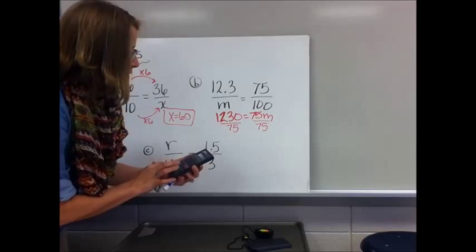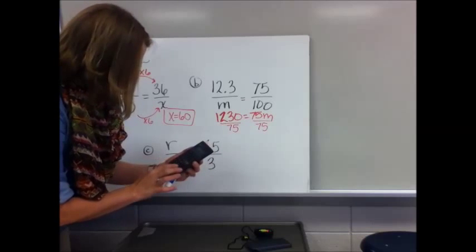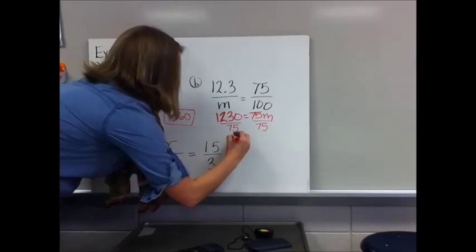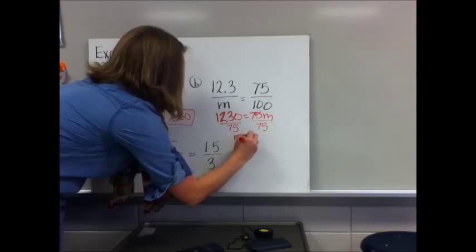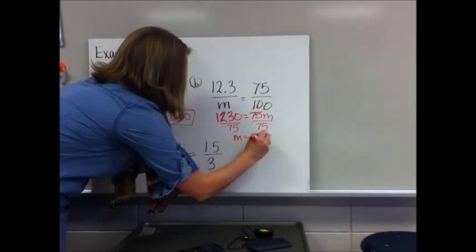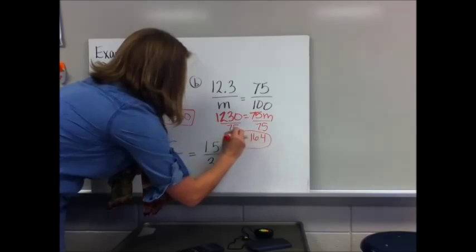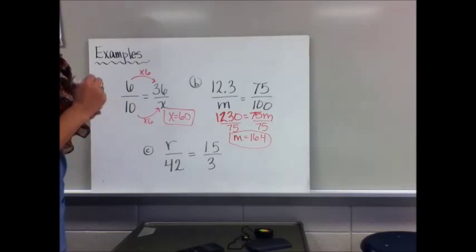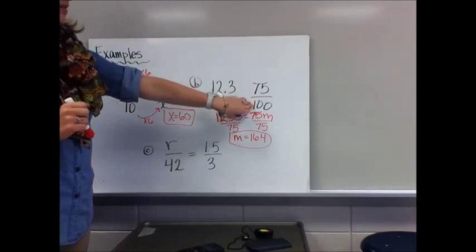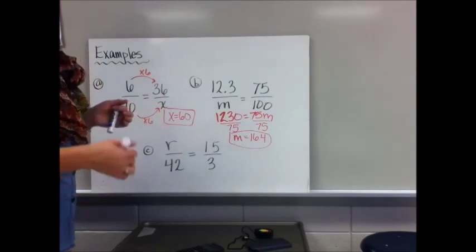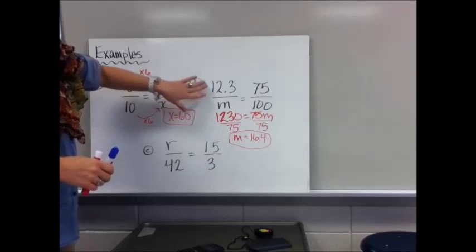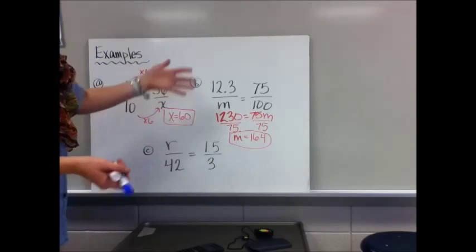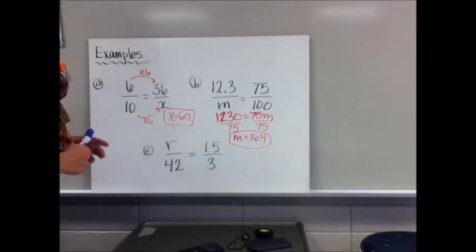1,230 divided by 75 is 16.4, so M equals 16.4. You can use estimation to check: 75 over 100 is like three-fourths, and 16.4 is smaller than 12.3 in a proportion consistent with that relationship.